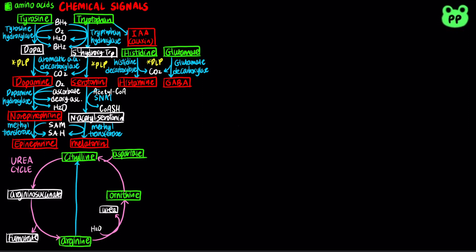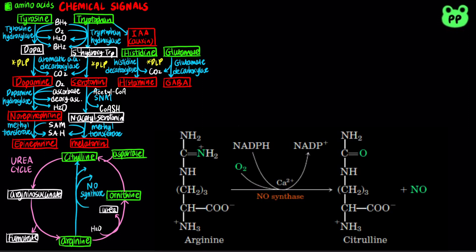The gaseous chemical signal nitric oxide is derived from arginine, catalyzed by nitric oxide synthase, which is coupled to the reduction of oxygen to water and oxidation of NADPH to NADP+, producing nitric oxide and citrulline, which is an intermediate of the urea cycle.